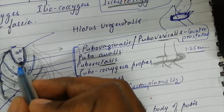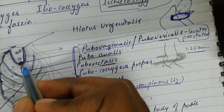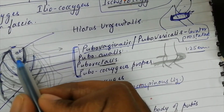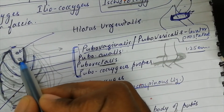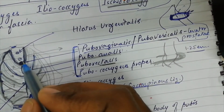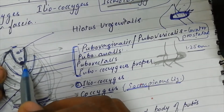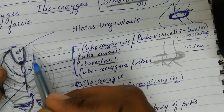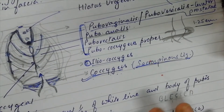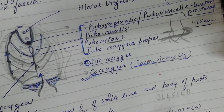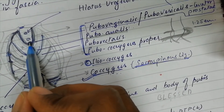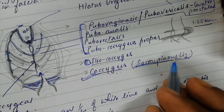When the perineal body is disturbed during childbirth or during perineal surgeries, the sphincter mechanism is disturbed, and apart from that, the support to the pelvic viscera is also disturbed. Next we will discuss the muscles attached to the perineal body, which is very important in females.